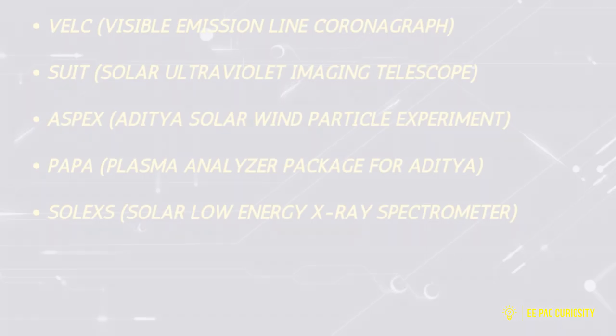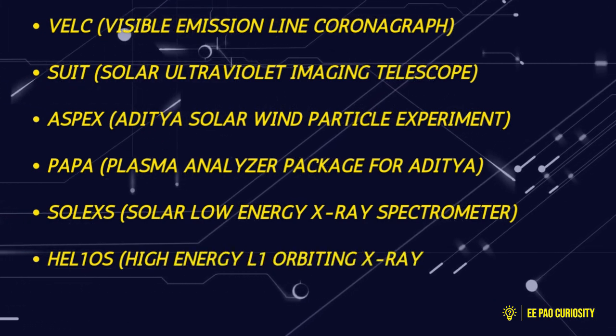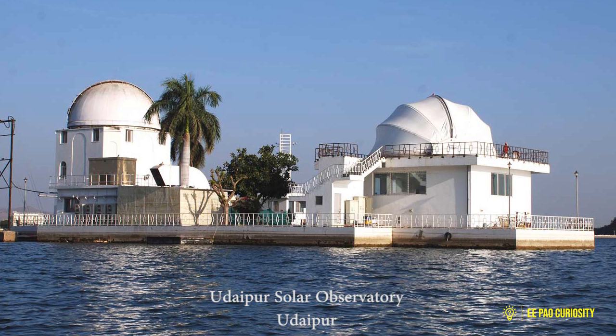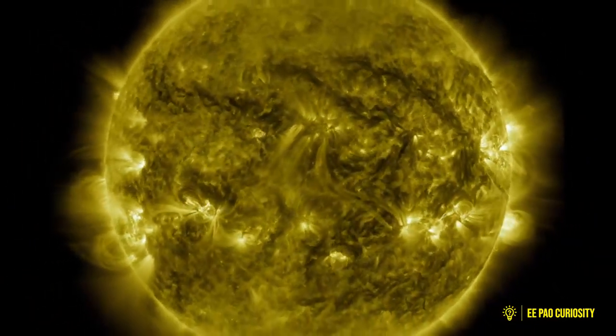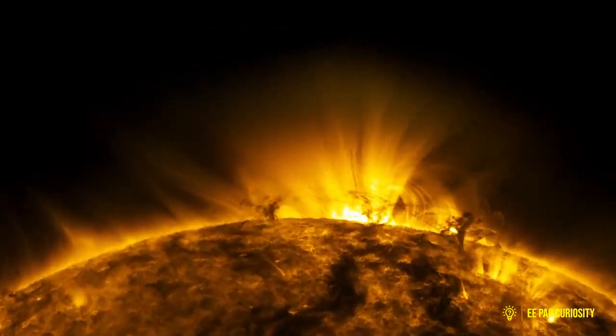Number 6: High Energy L1 Orbiting X-ray Spectrometer. It is jointly developed by ISRO Satellite Center and Udaipur Solar Observatory Udaipur to observe the dynamic events in the solar corona and provide estimated energy used to accelerate those charged particles during the coronal mass ejections.